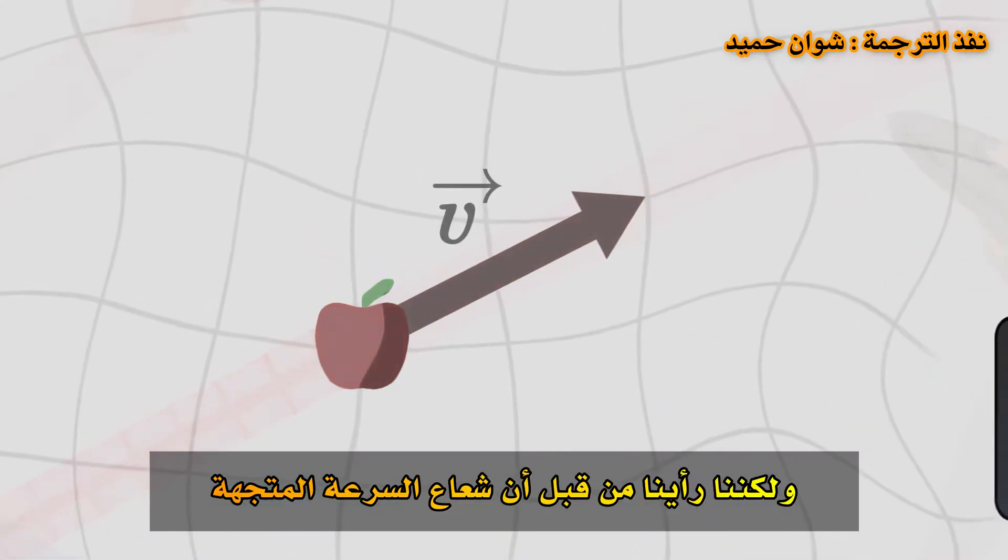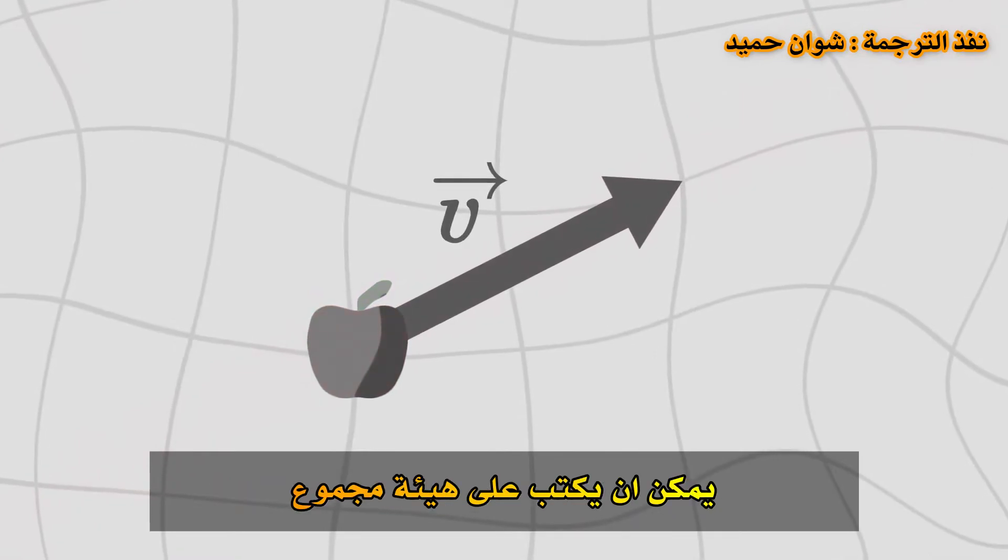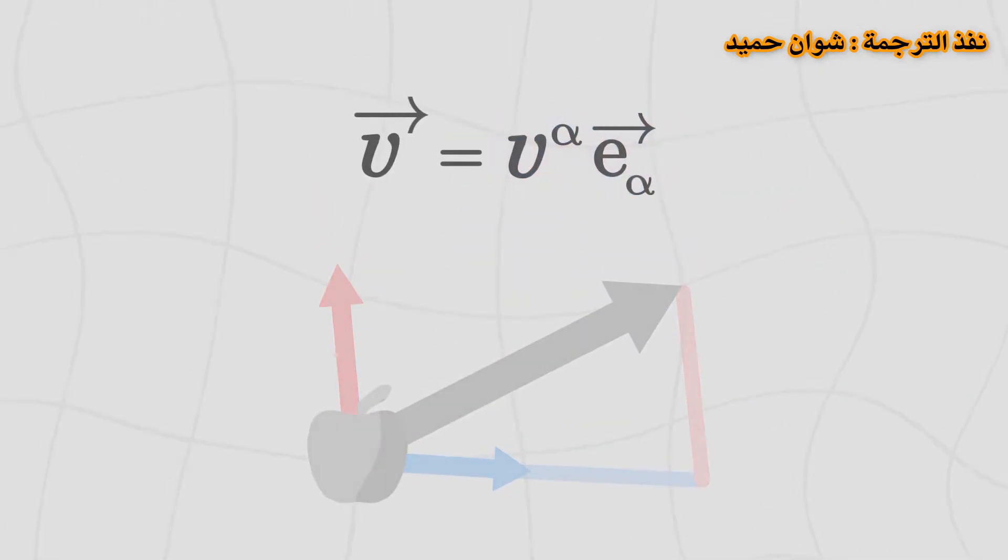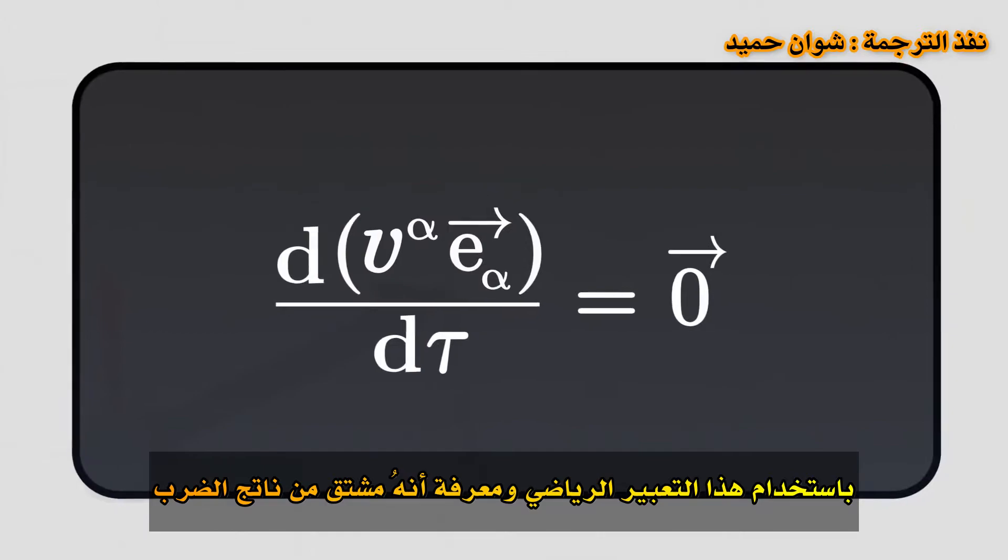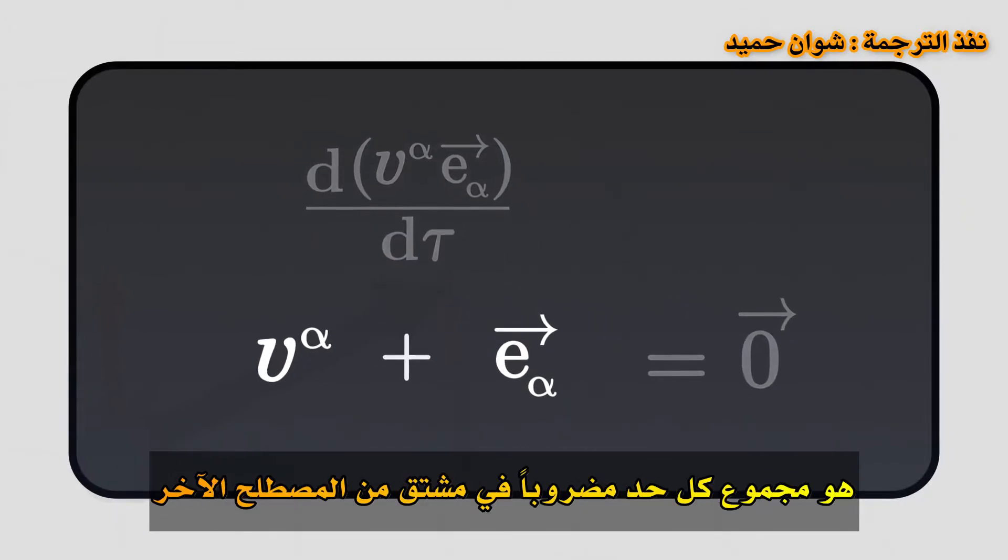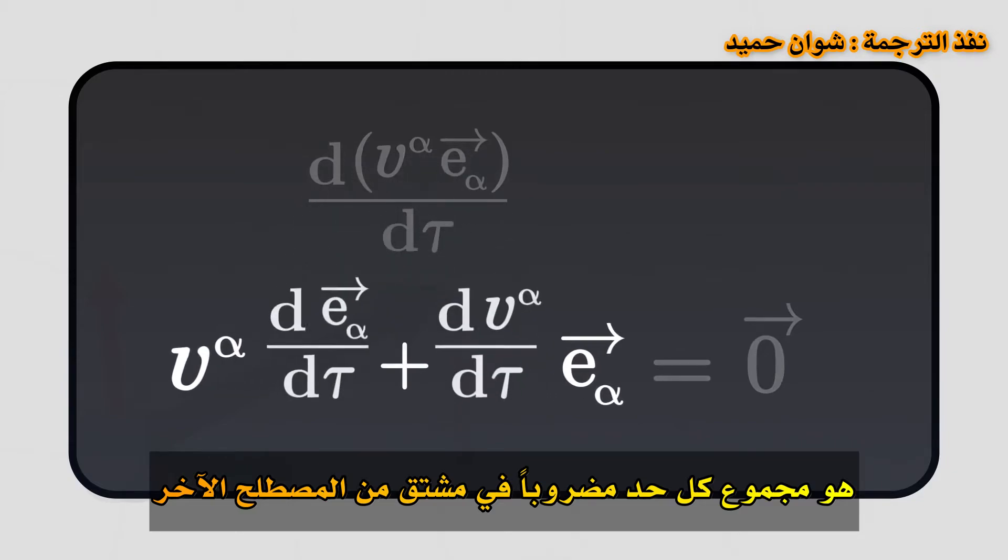But we saw previously that the velocity vector can be written as the sum of its components multiplied by the basis vectors. Using this expression, and knowing that the derivative of a product is the sum of each term multiplied by the derivative of the other term,